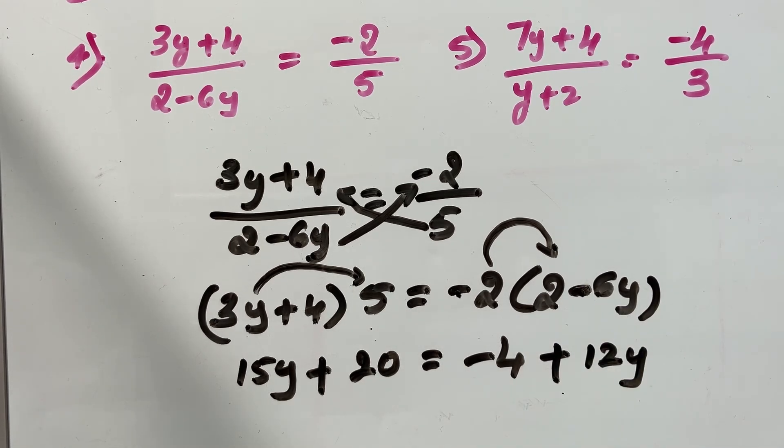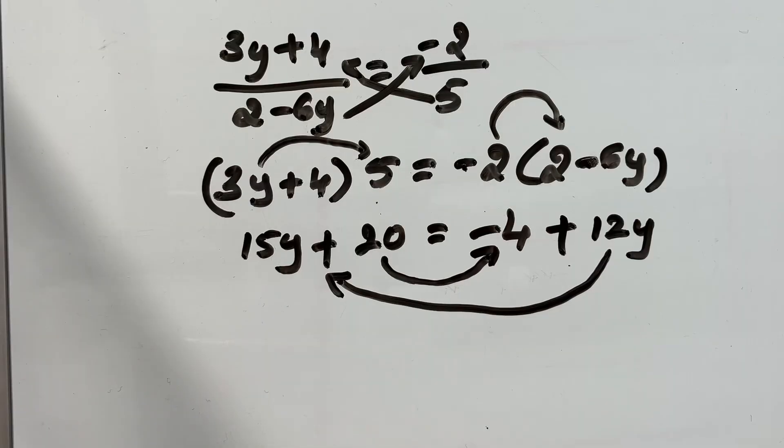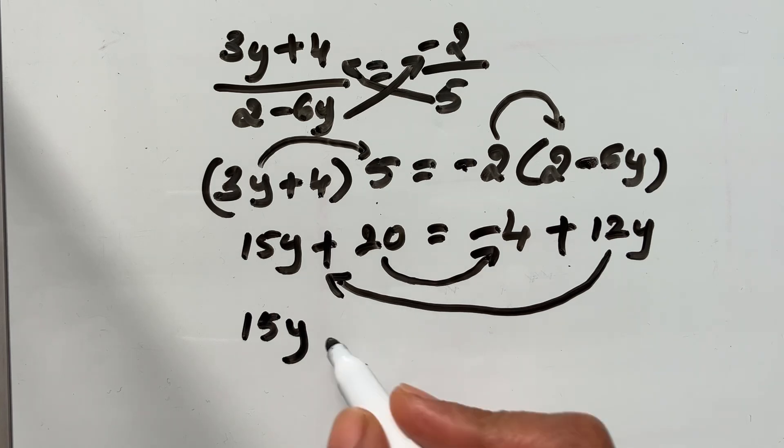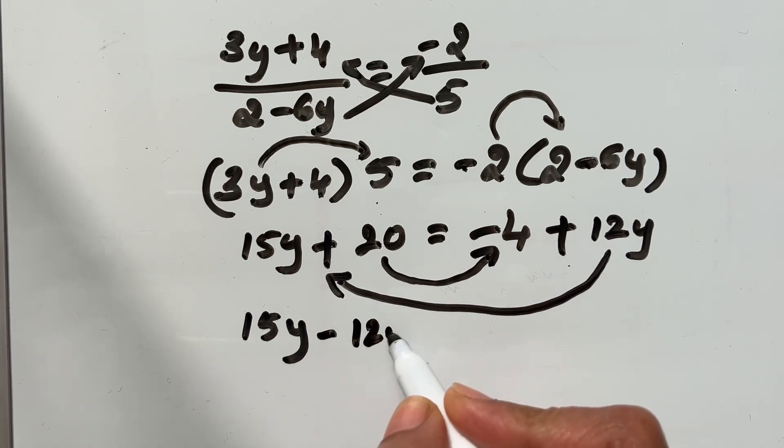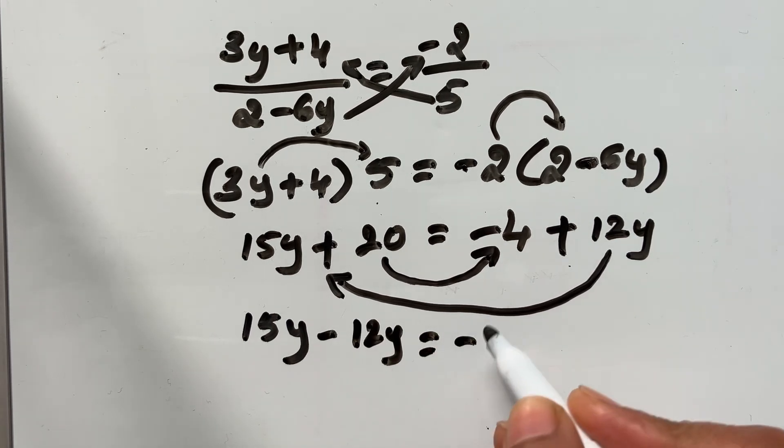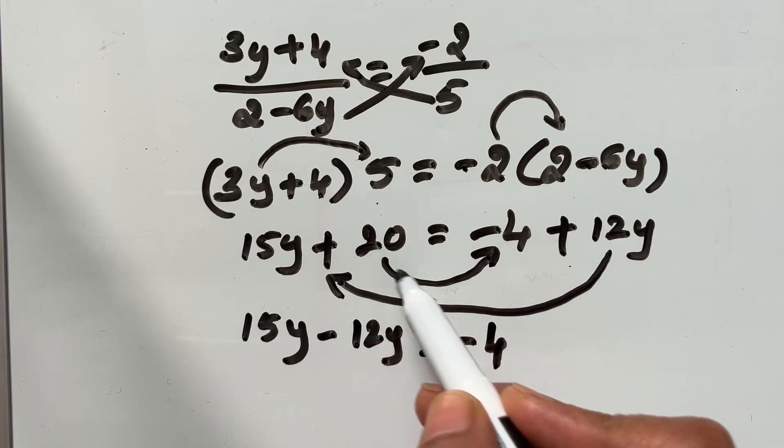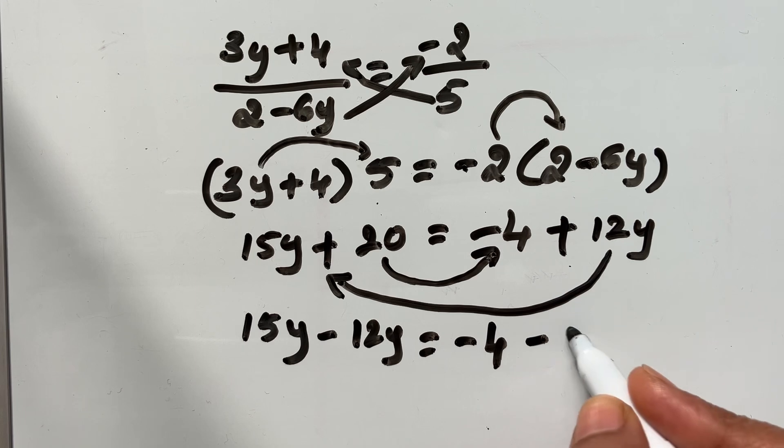Now, let's rearrange the equation. I am going to bring positive 12y to left hand side and positive 20 to the right hand side. That is 15y plus 12y, if you bring to the other side minus 12y. Similarly, here negative 4 is there already. Plus 20 if you bring to the other side minus 20.